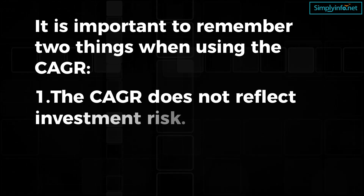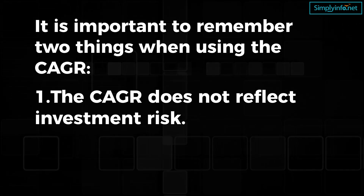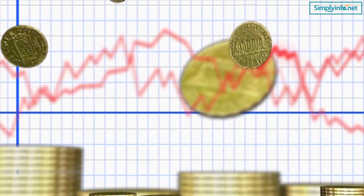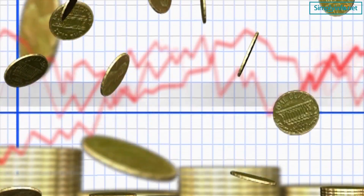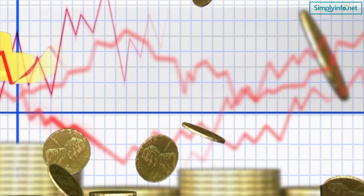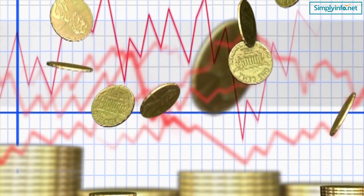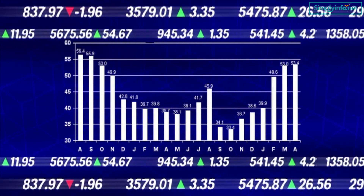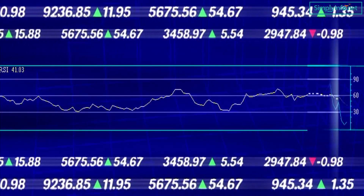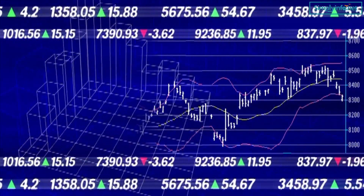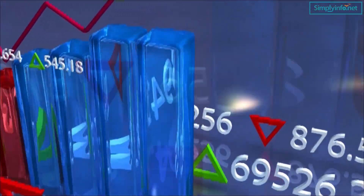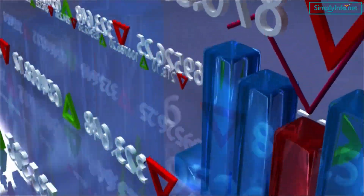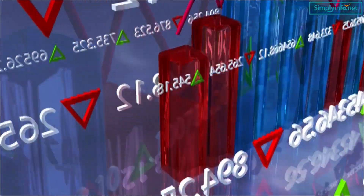It is important to remember two things when using CAGR: number one, CAGR does not reflect investment risk; number two, you must use the same time periods. Investment returns are volatile, meaning they can vary significantly from year to year. However, CAGR does not reflect volatility — it is a pro forma number that provides a smoothened annual yield, giving the illusion of steady growth even when the underlying investment value varies significantly. This volatility or investment risk is important to consider when making an investment decision.